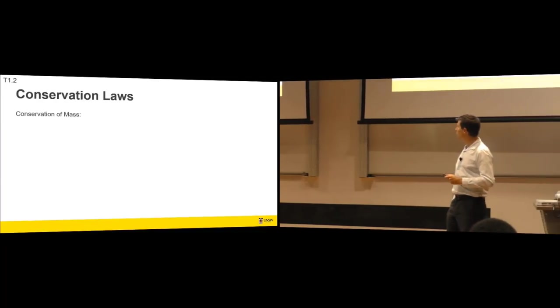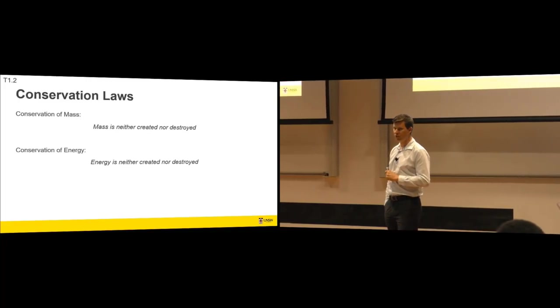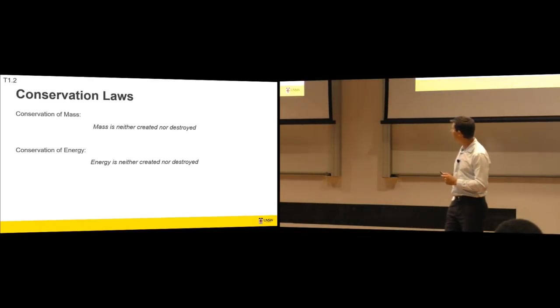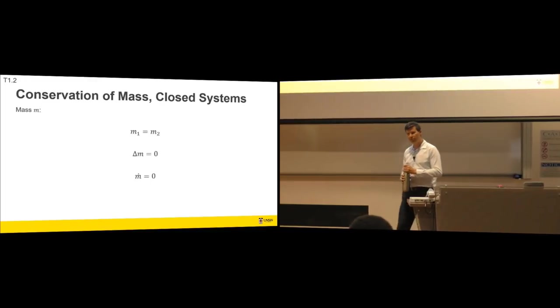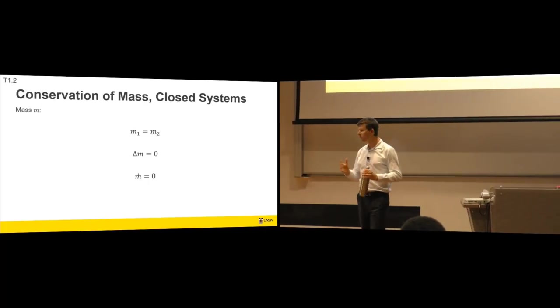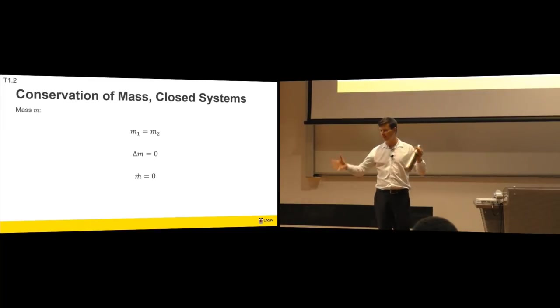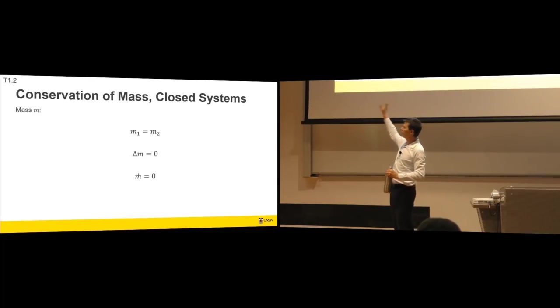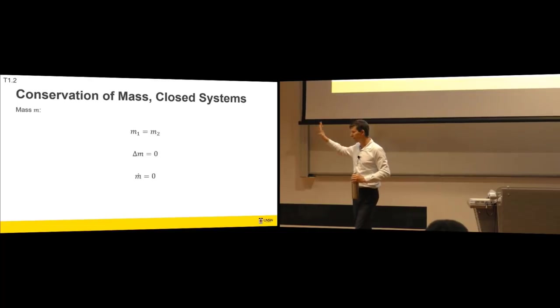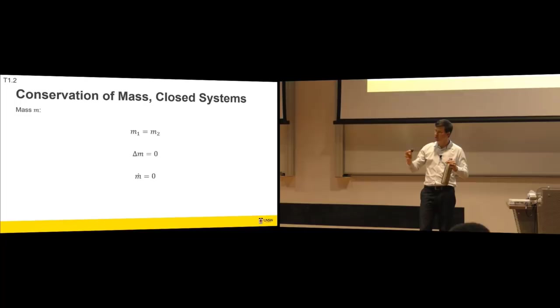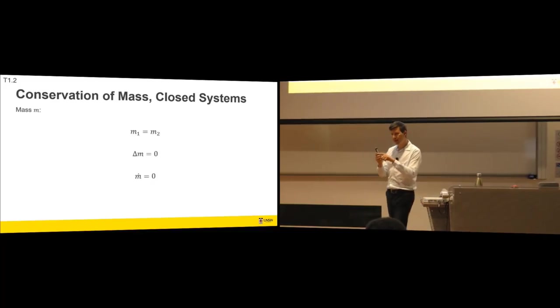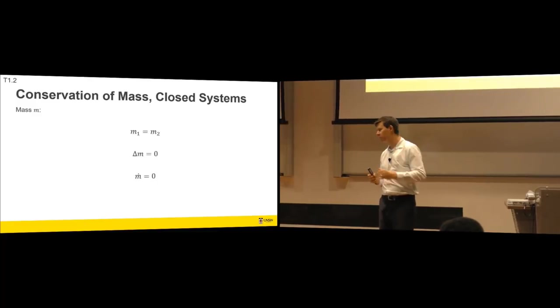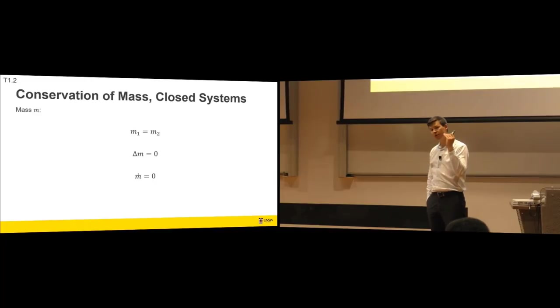Conservation laws. The conservation of mass - mass is neither created nor destroyed. And energy is neither created nor destroyed. This is the first law of thermodynamics. But may change forms. The conservation of mass for a closed system is simple. The mass in the system at the beginning, m1, is the same as the mass in the system at any other state. The change in mass, delta m, is always zero and the mass rate across the boundary of the system is equal to zero.